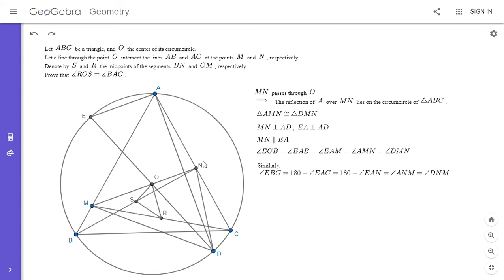So that means in triangles ECB and DMN, two of the three angles are equal. So they have to be similar triangles. Triangle EBC is similar to triangle DNM.